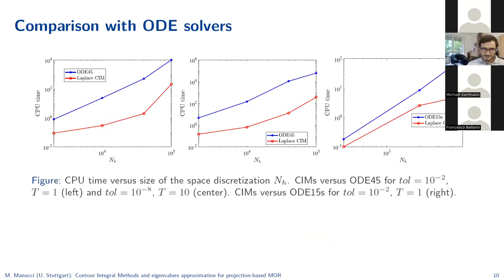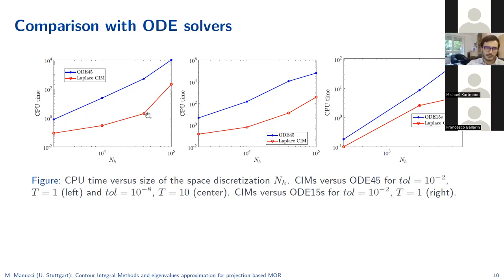Finally, to compare with standard time integration schemes: here for different problem sizes, the CPU time to evaluate the solution at the final time is compared with ODE45 and ODE15s. ODE45 is an explicit integrator with time-step constraints, but even with ODE15s the contour integration approach is faster in computing the solution at the given time.